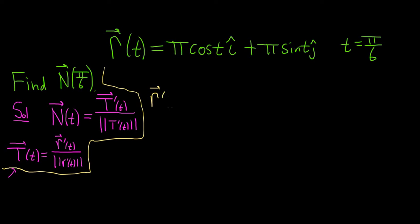So r prime of t: the derivative of cosine is negative sine, giving us negative π sine(t) î. And the derivative of sine is cosine, giving us plus π cosine(t) ĵ. That's our derivative.